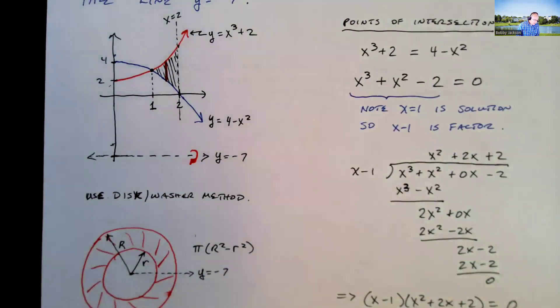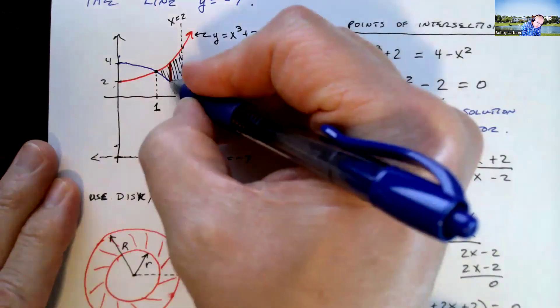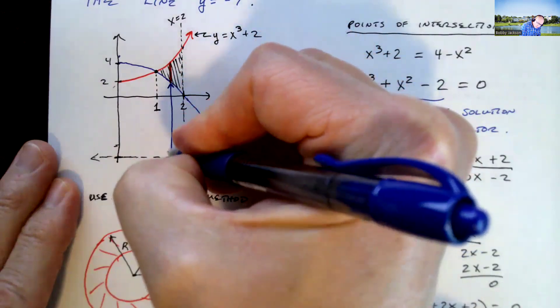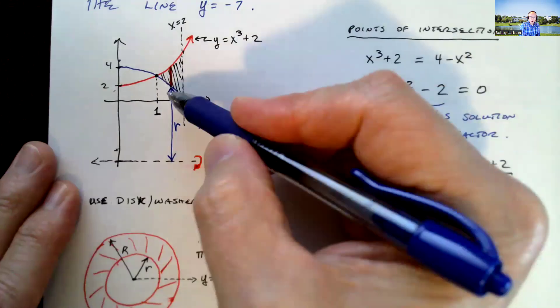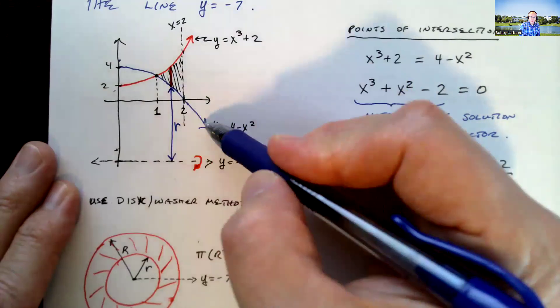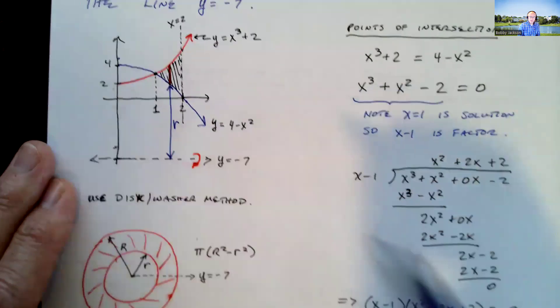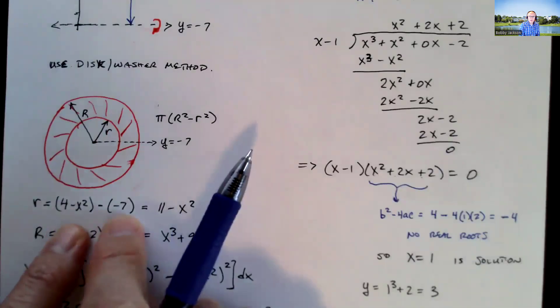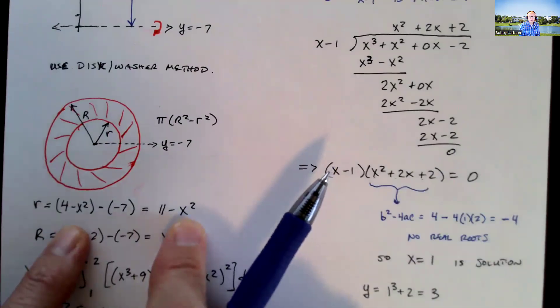So what's our inner radius? Our little r is from the axis x equal negative 7 to the bottom of this. So this from here to here is our little r. And so how do we find the value of y? We take the top part, which is at what y equal what? 4 minus x squared minus the bottom part, which is at y equal negative 7. So I've got 4 minus x squared minus a negative 7 becomes 4 plus 7 or 11 minus x squared. That's the value of little r.